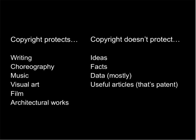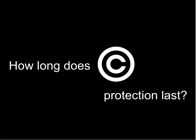What does copyright protect? It protects writings, choreography, music, visual art, film, and even architectural works. It does not protect ideas, facts, or data — as long as that data is made up mostly of facts. It also does not protect useful articles. Useful articles are protected by patents, which is a different area of intellectual property law.